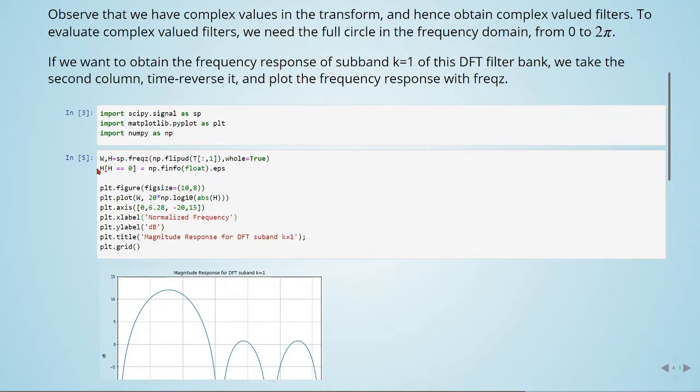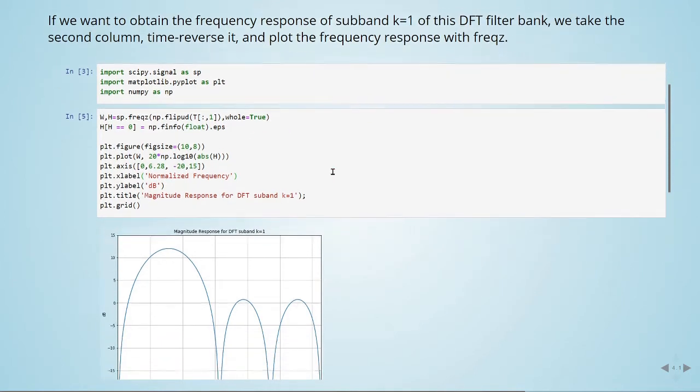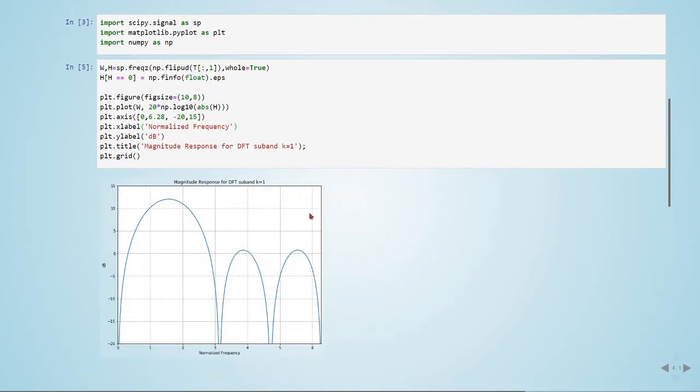Here is just to avoid log 10 of 0, and now we are plotting the magnitude response for the DFT for sub-band k equals 1. We have dB, and we have normalized frequency. Here is approximately π, and here we are at 2π.